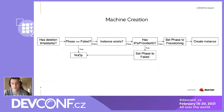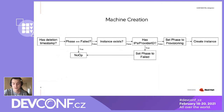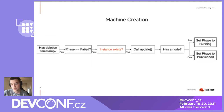Provisioning phase means that cloud instance creation was started. Now, what happens if the cloud instance exists? Then the controller calls update for this provider, and the update just synchronizes some data from the cloud provider or performs some additional configuration that needs to be done after machine creation. Next, it checks if a node for this machine was created. If a node exists, then the phase is set to running. If the node doesn't exist, the phase is set to provisioned. So running means that the machine has a node associated with it and has a cloud instance. Provisioned means that the VM was created, but the node is still missing.